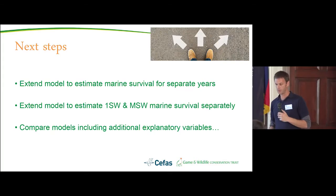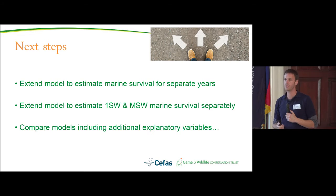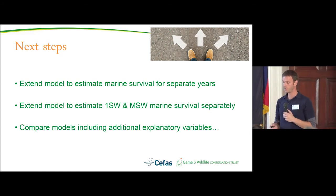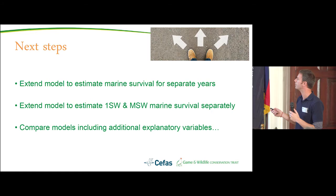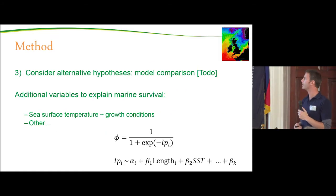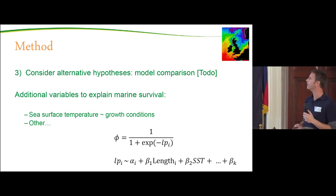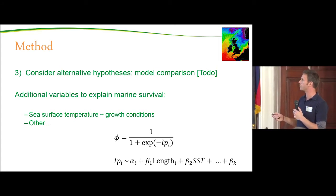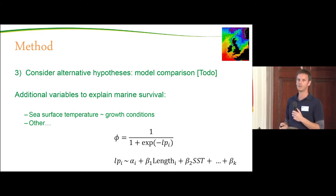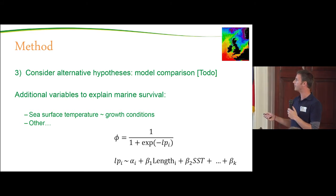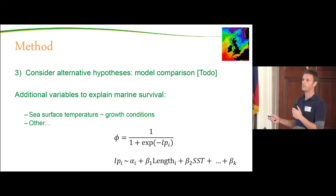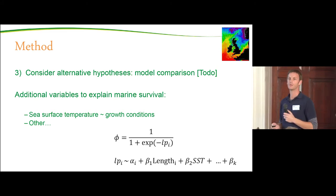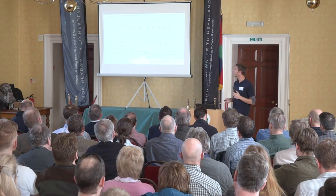The next steps are to extend this model to estimate marine survival for separate years, to estimate one-sea-winter and multi-sea-winter survival separately — which we're already working towards — and to compare models including additional explanatory variables such as sea surface temperature and growth conditions. This is straightforward in this framework: we already have alpha, beta, and length in the logistic regression; we simply add another beta for sea surface temperature and so on. It's quite an adaptable framework.